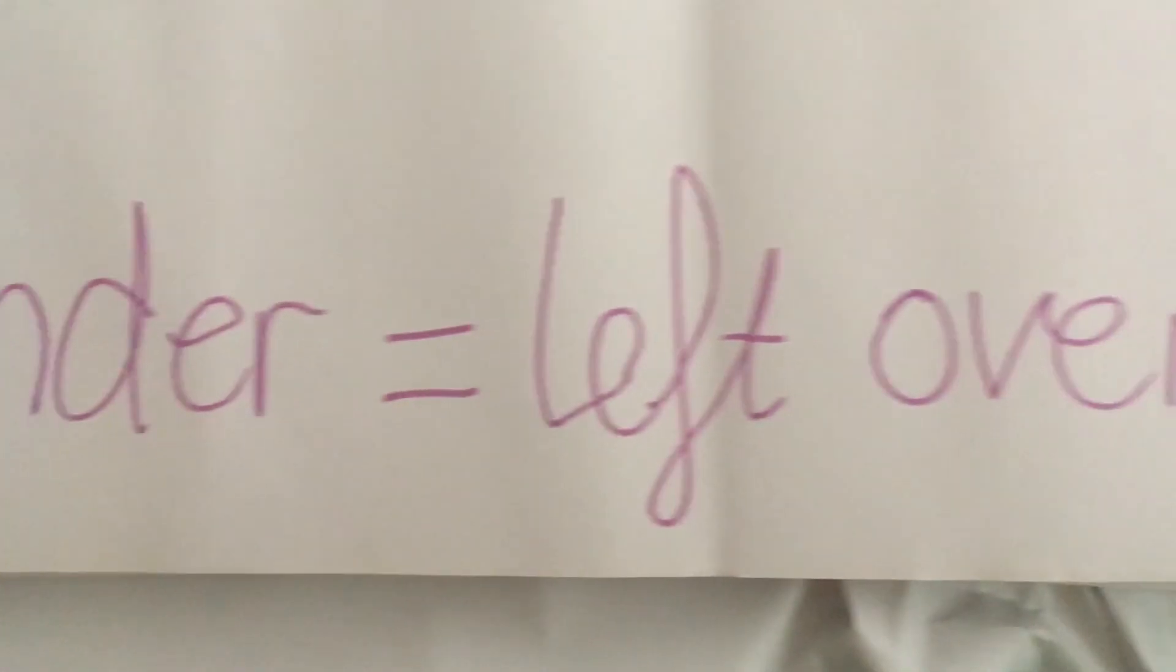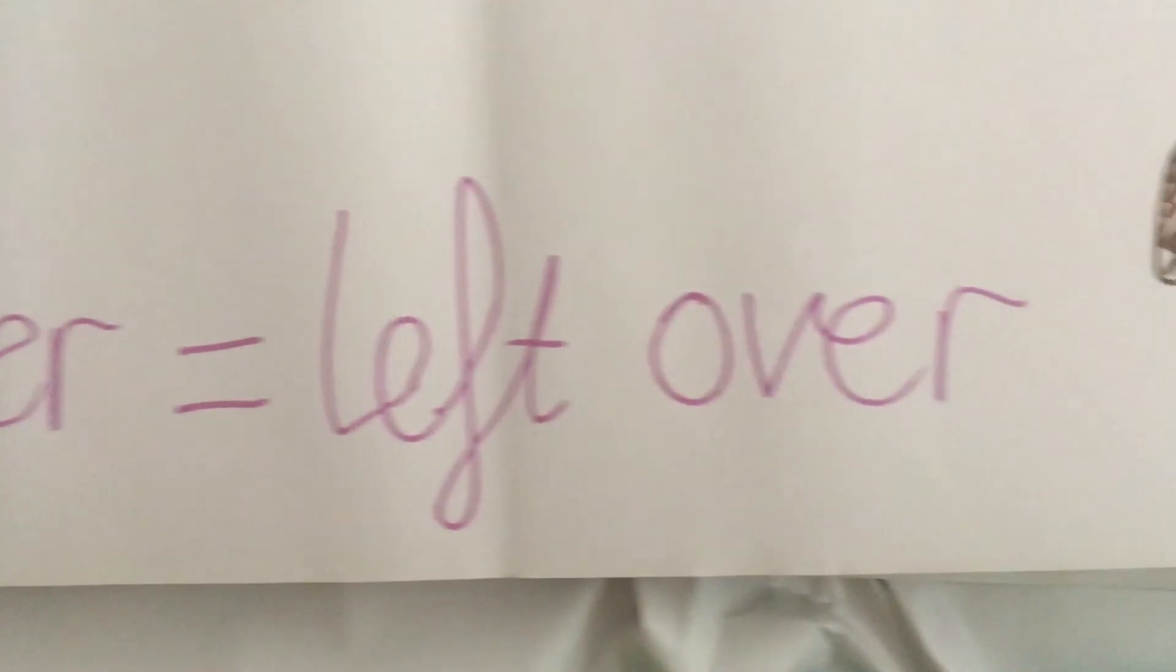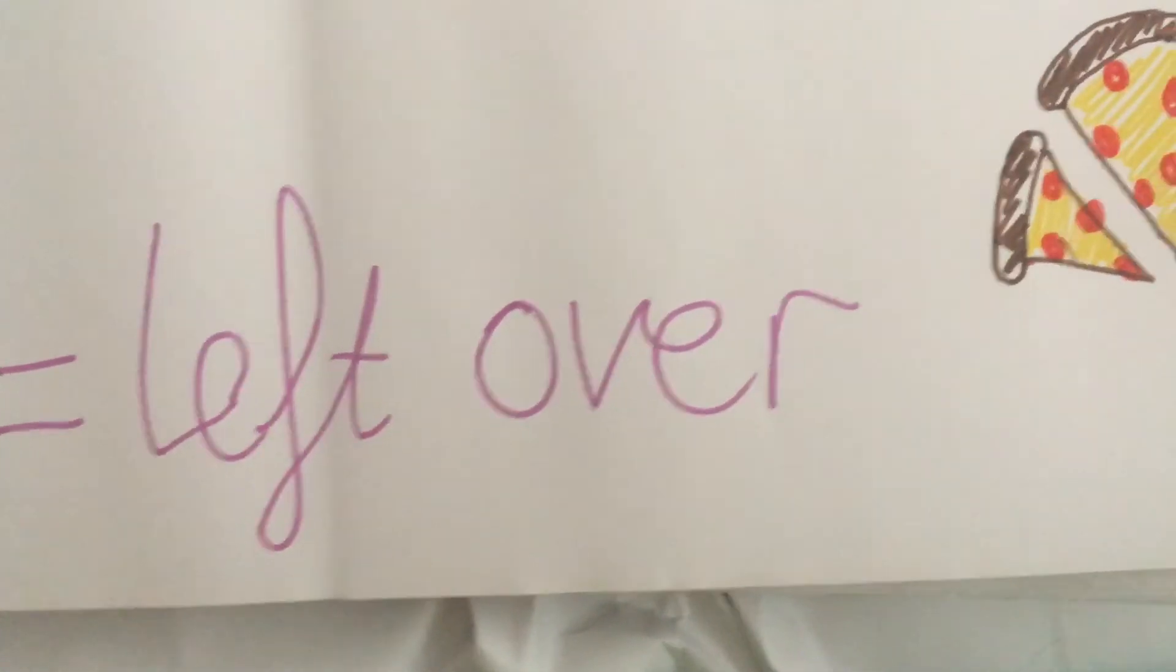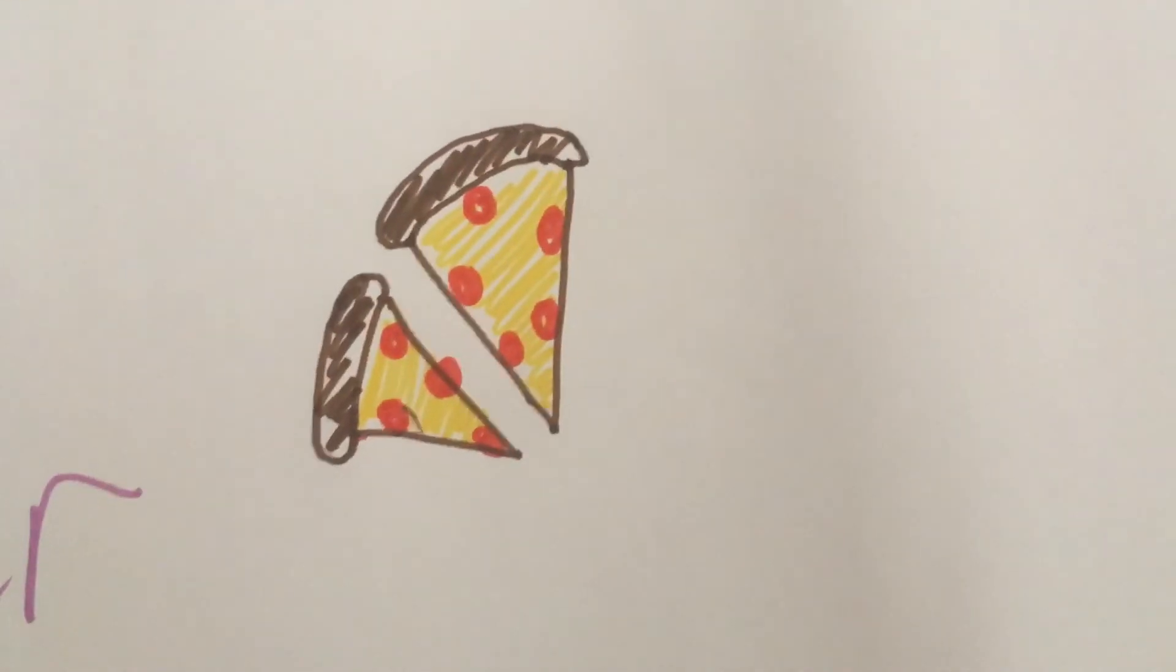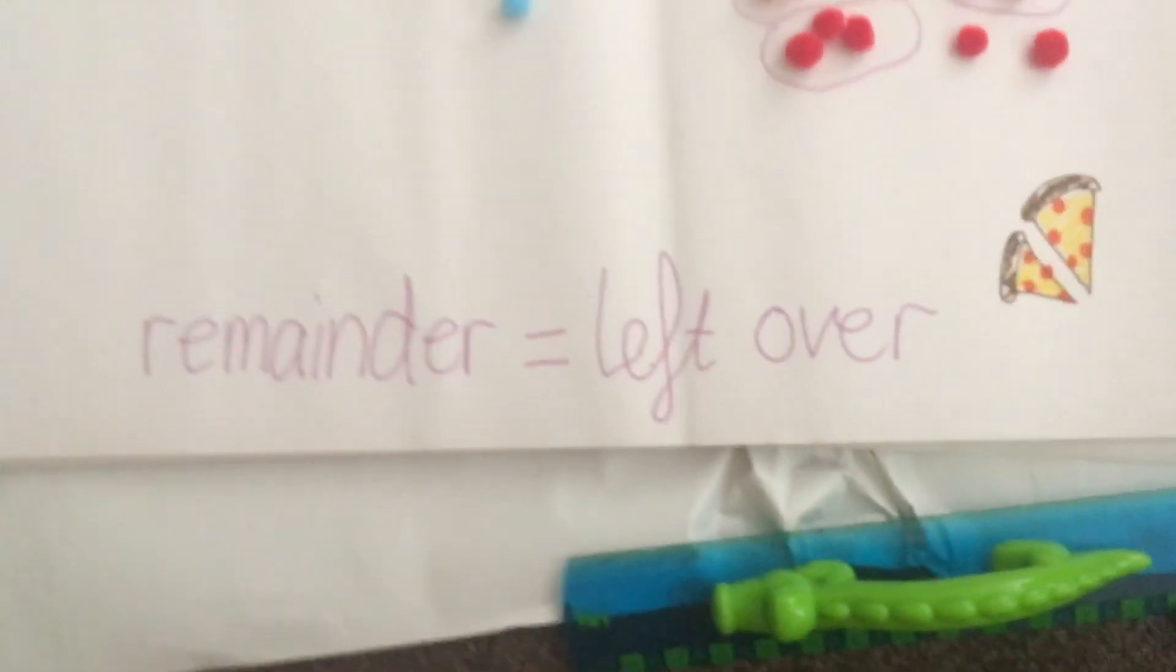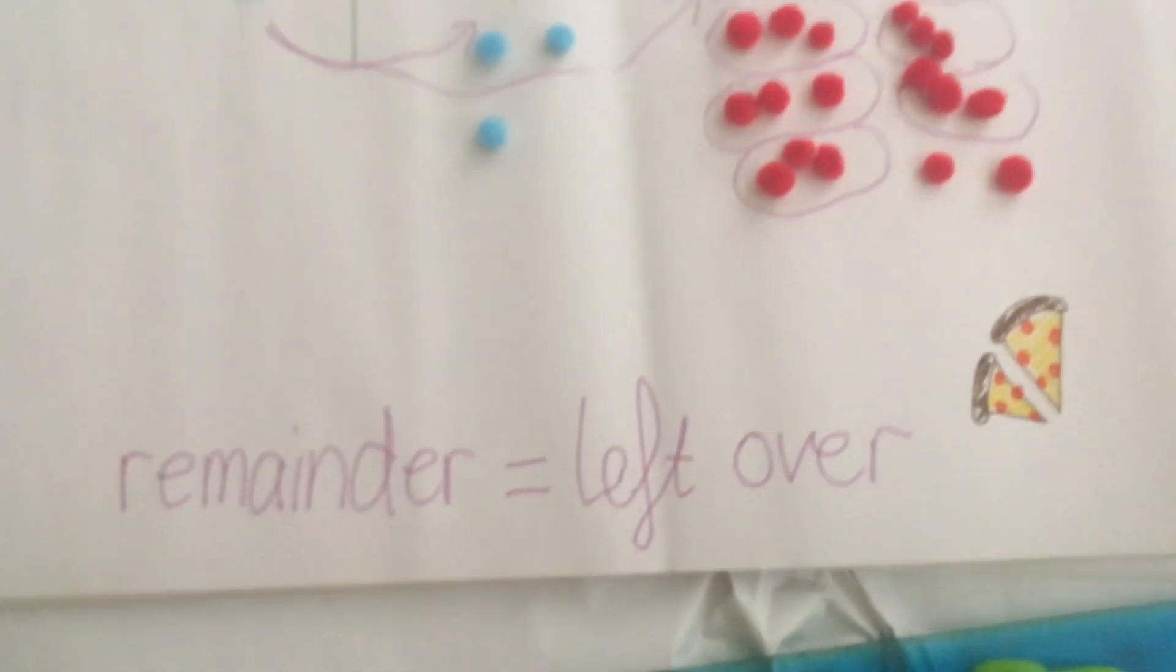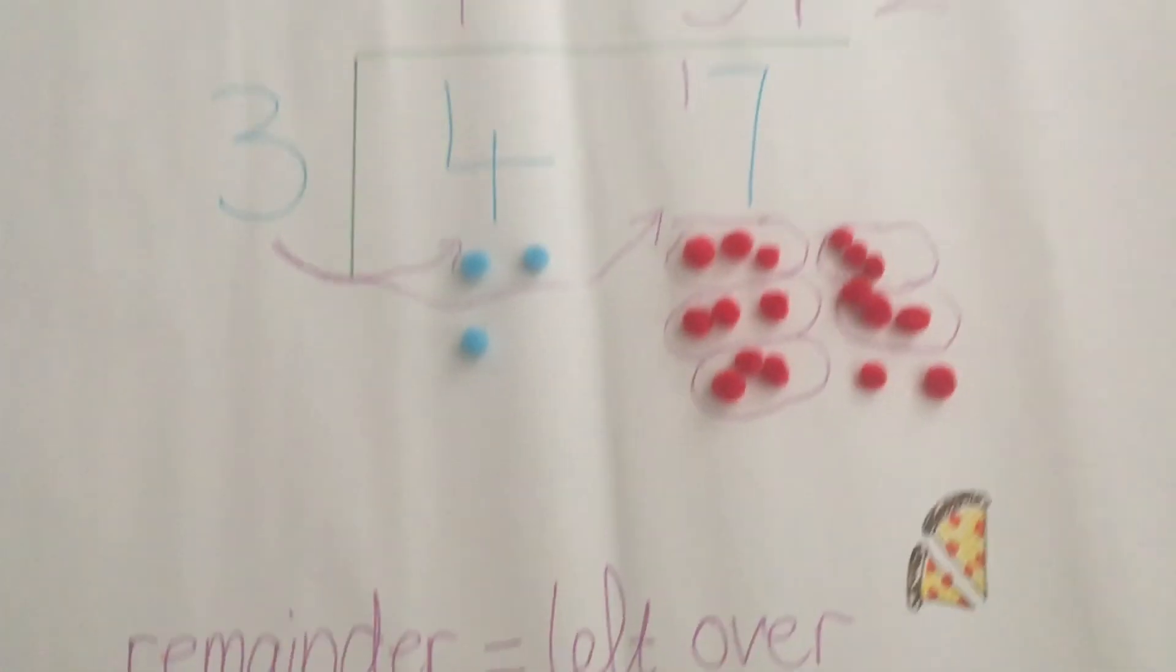Remember that remainders mean the leftover. They are the remaining pieces. I always kind of think of it like pizza. When I order a pizza and I only eat some, I've got some remaining. So they are my remainder pieces. It's kind of the same for division.